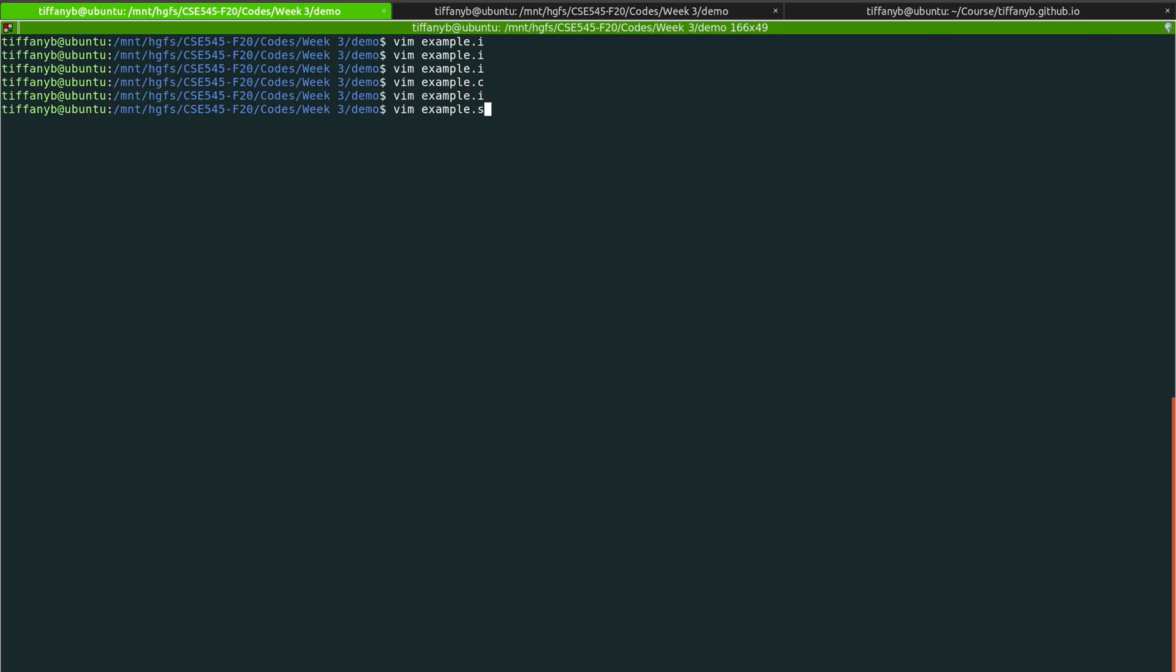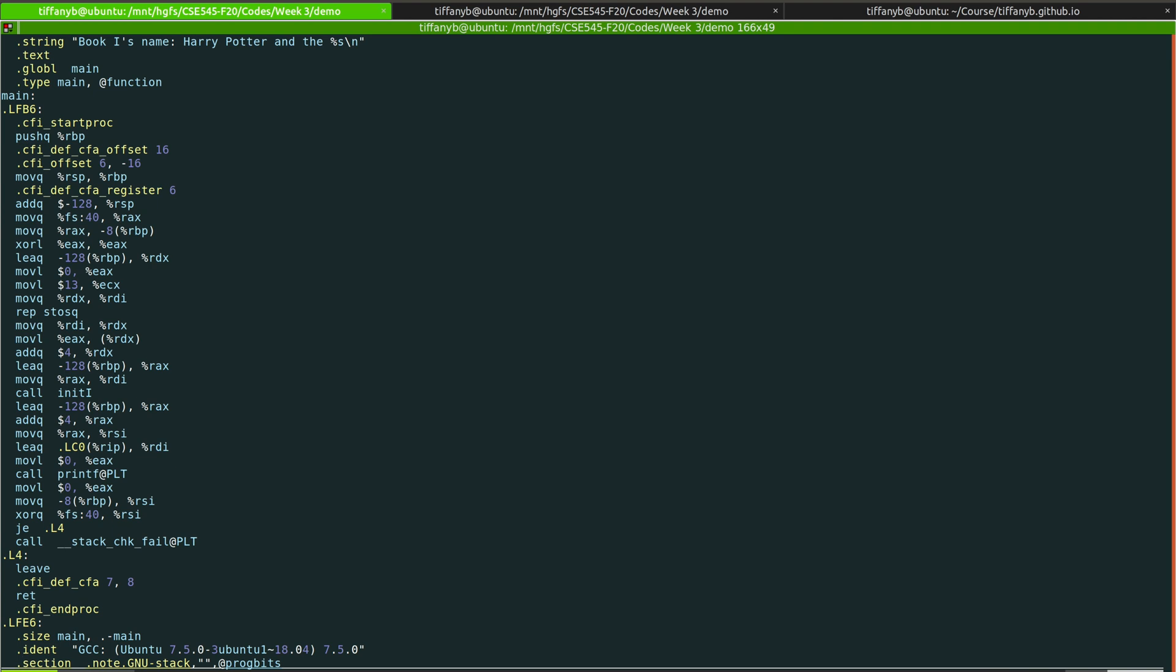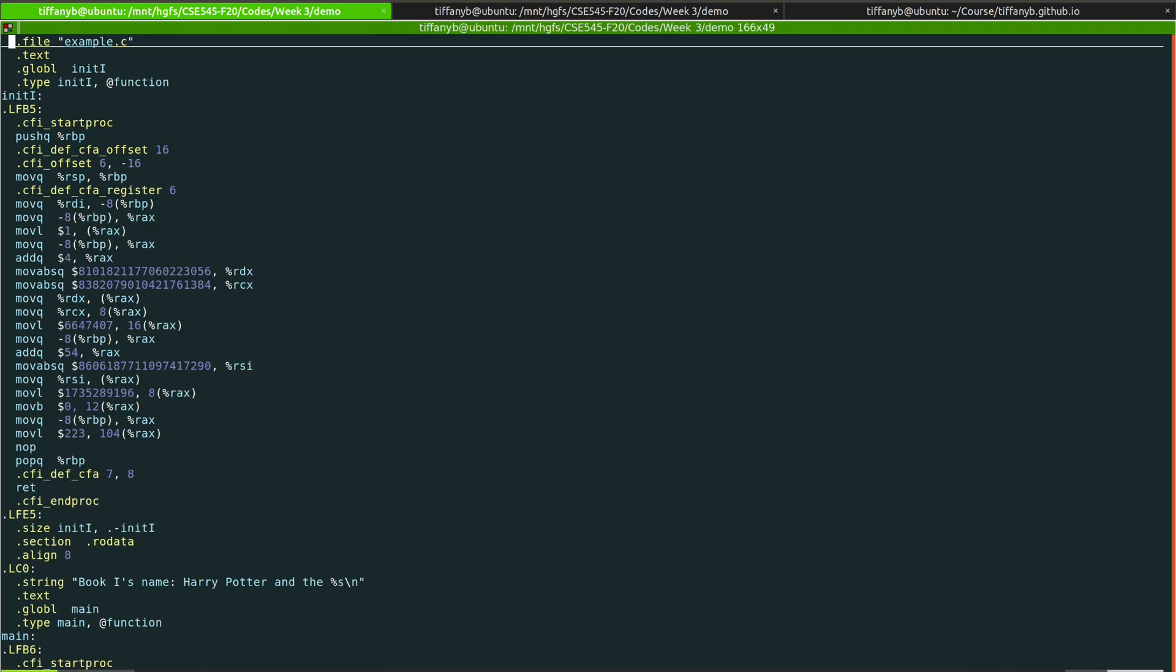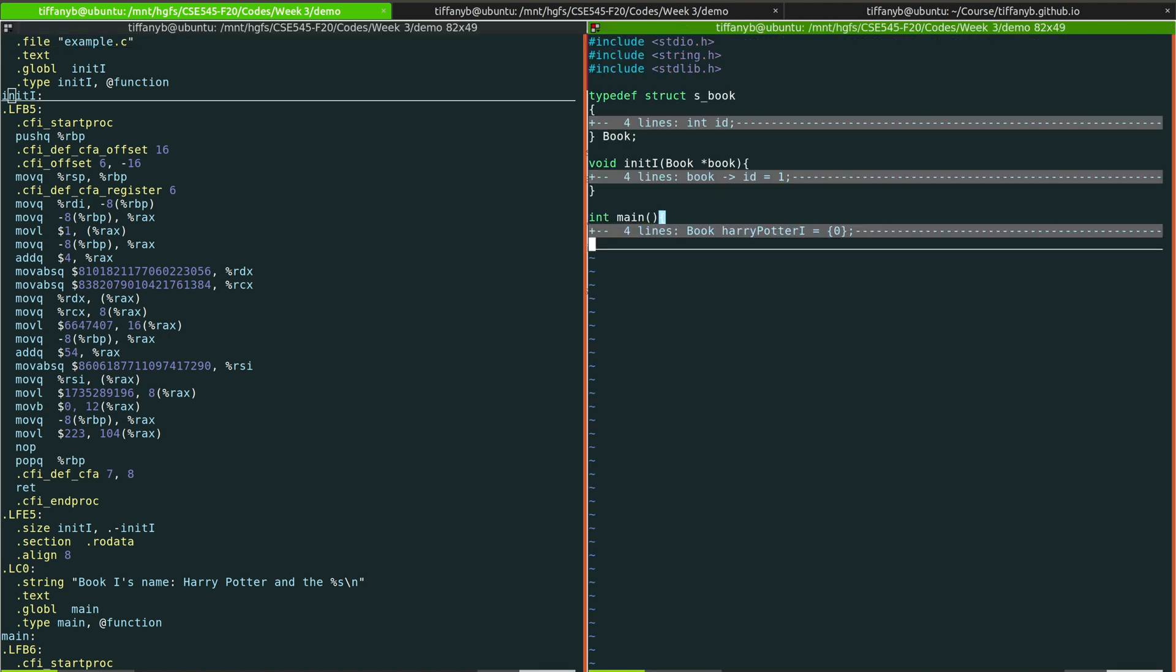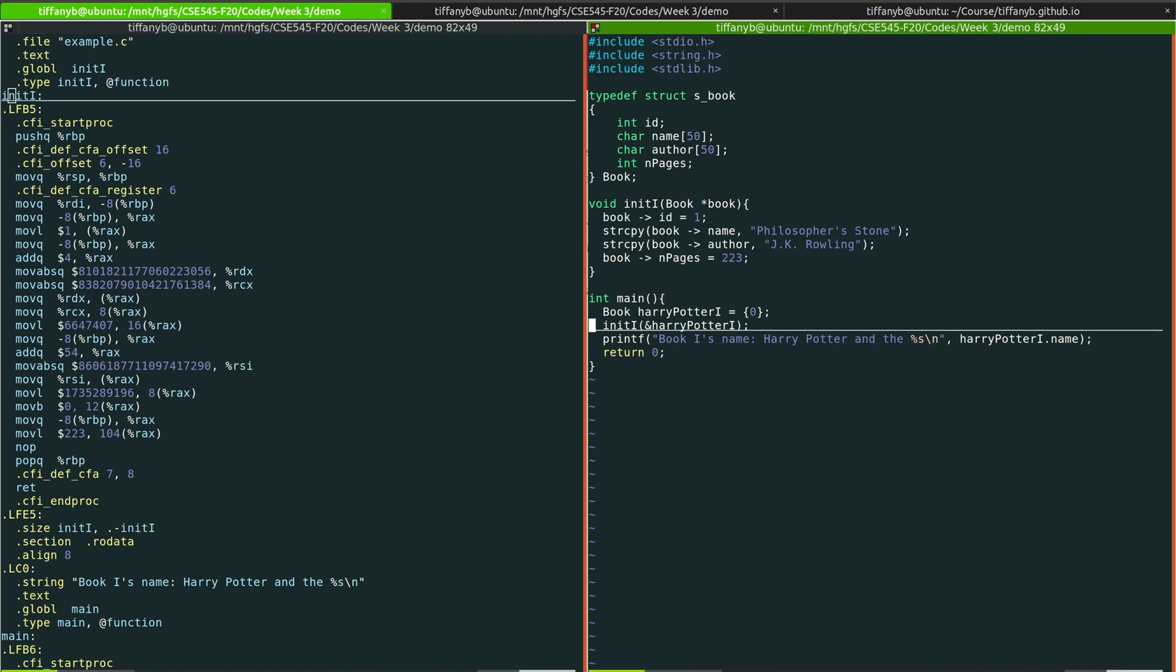And if you check the generated assembly, you'll be able to see that the generated assembly is pretty much ready. And let's take a look at the original source code. The original source code is composed of two functions, init_i and main.